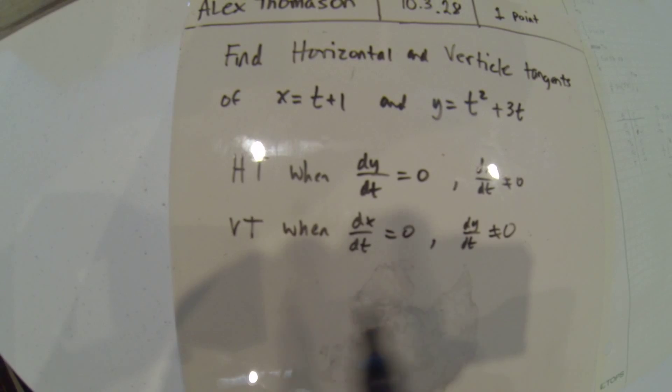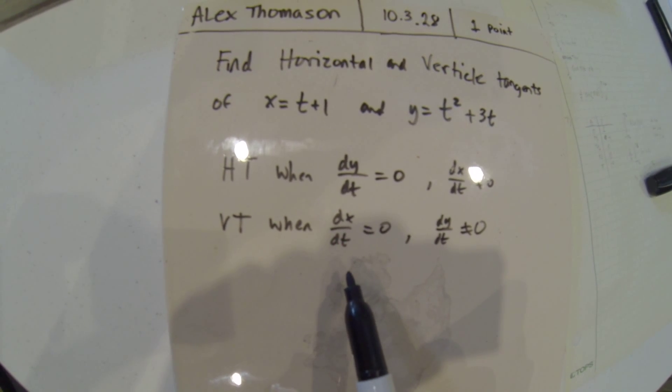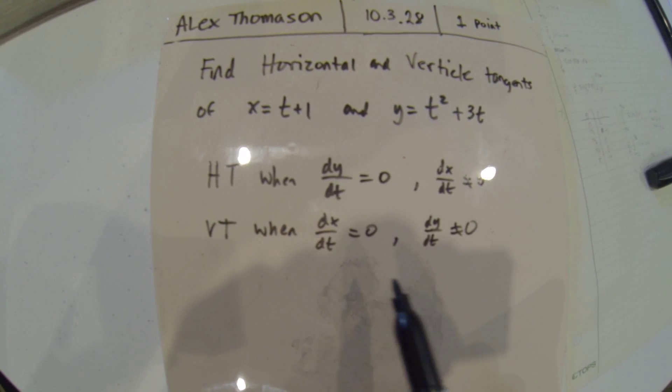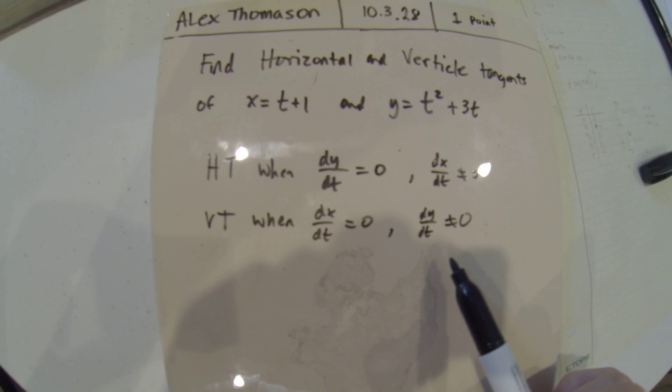And we know there are vertical tangents when dx dt equals 0 when dy dt does not equal 0.